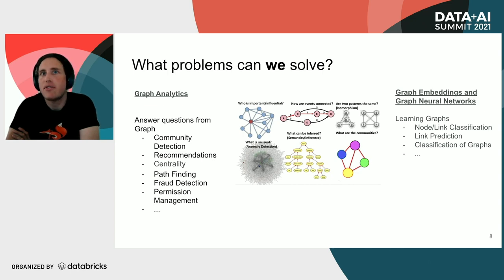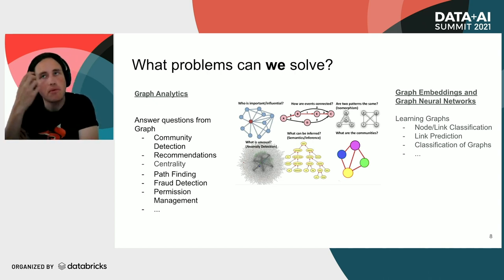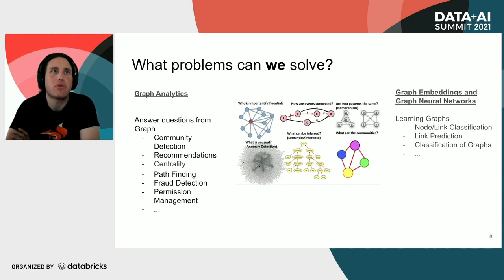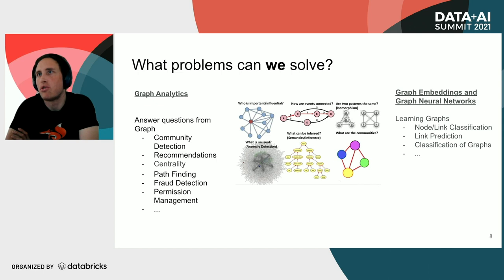If we look at knowledge graphs, it's a lot about what information can be inferred in terms of semantic inference. We can also ask questions about entire graphs — are they actually the same? This comes up when looking at protein or molecule structures, where we want to predict if they are the same or at least similar molecules. We'll treat this in two different areas: first, graph analytics — trying to answer questions like community detection, recommendations, and pathfinding — and then in the second part, we'll go into learning new features about a graph, such as node or link classification, link prediction, or classification of entire graphs.